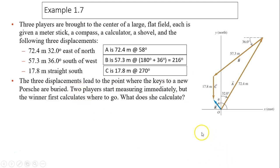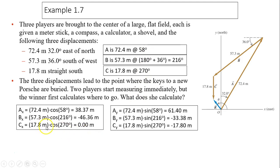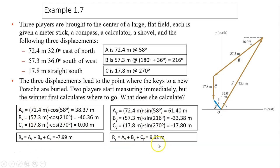So how do we add vectors? First, you find components of Ax, Ay, Bx, By, Cx, Cy by substituting numbers into the equations. Next, you add all the x together and all the y together.